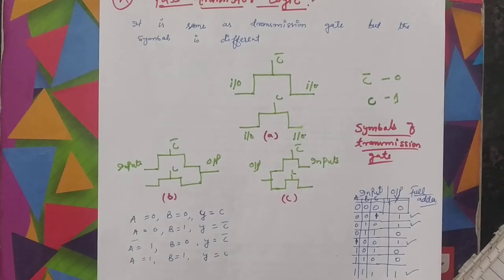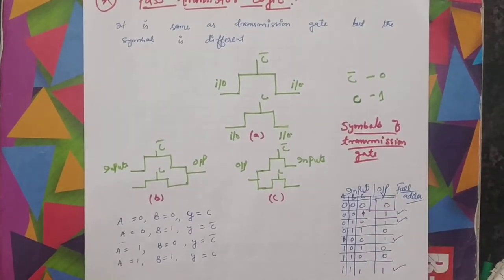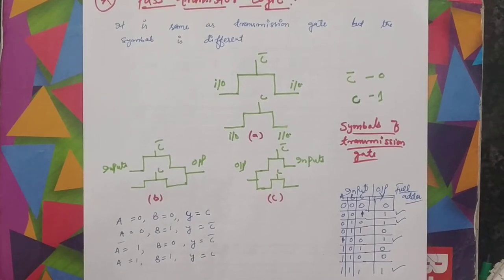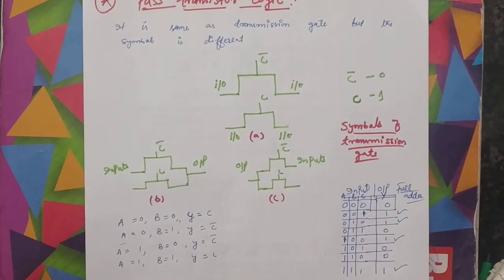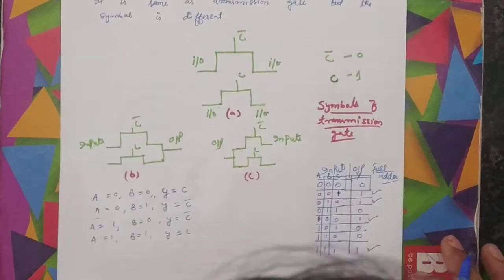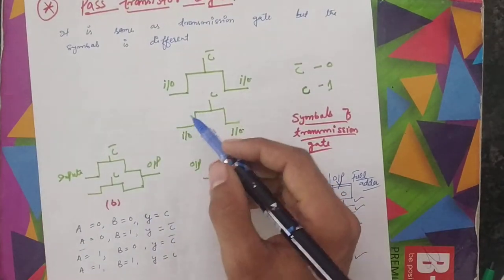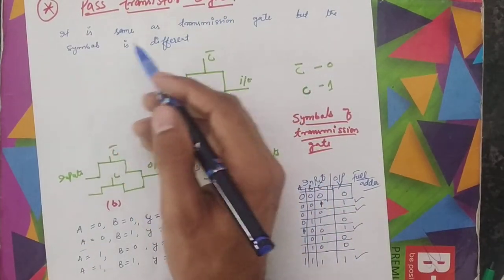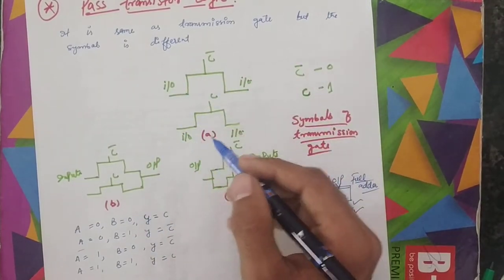Hello guys, welcome to this session in my new video. Today's topic is pass transistor logic. This logic is similar to transmission gates, but the difference is we are using only one transistor here instead of two. This is also a bidirectional pass transistor logic — it is the same as transmission gates but the symbol is different.